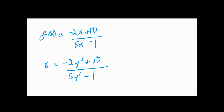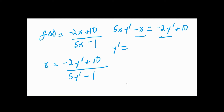Solving for y' using the shortcut: terms with y' move to the left with sign changes, and their coefficients form the denominator. The denominator is 5x + 2 (sign of -2 changes to +2), and the numerator is x + 10 (sign of -x changes to +x, and 10 keeps its sign). So y' = (x + 10) / (5x + 2).